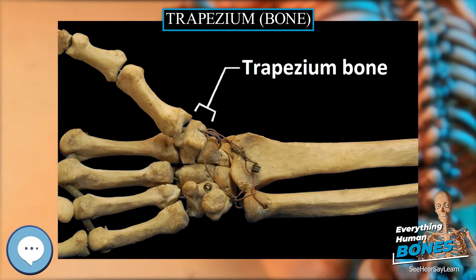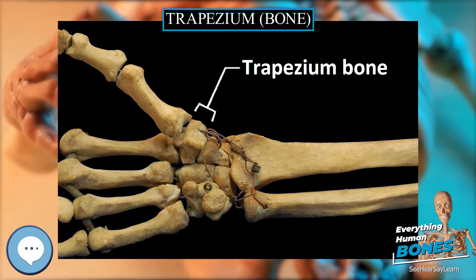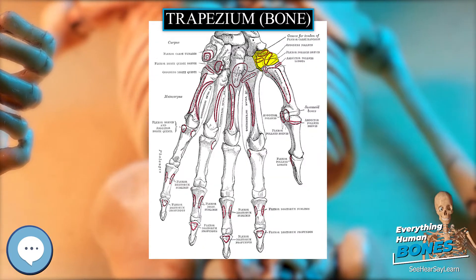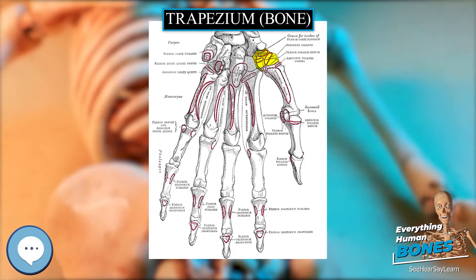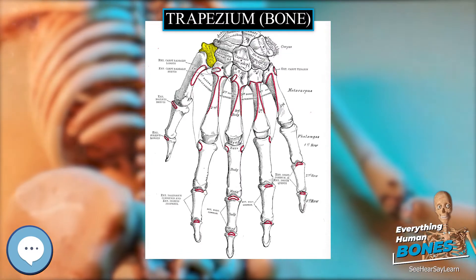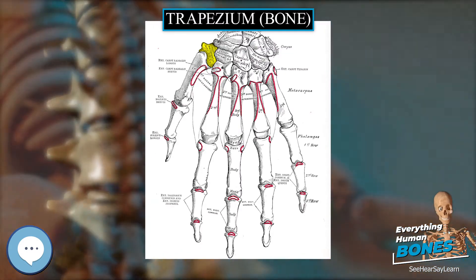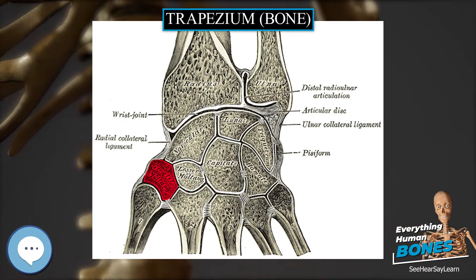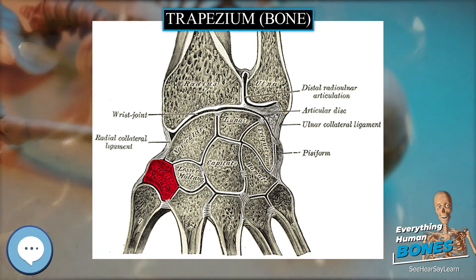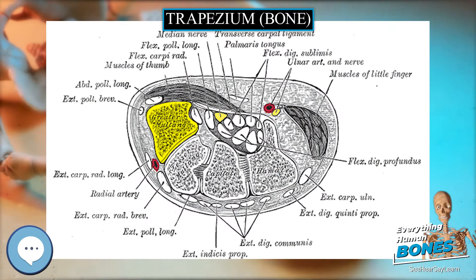The trapezium is an irregular-shaped carpal bone found within the hand. It is found within the distal row of carpal bones and is directly adjacent to the metacarpal bone of the thumb. On its ulnar surface are found the trapezoid and scaphoid bones. The superior surface is directed upward and medialward; medially it is smooth and articulates with the scaphoid, laterally it is rough and continuous with the lateral surface.